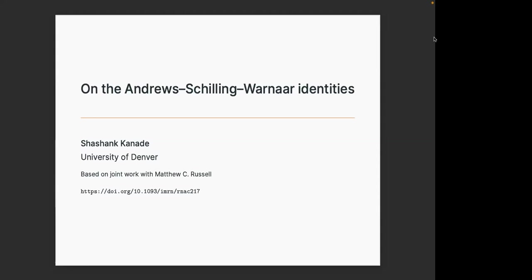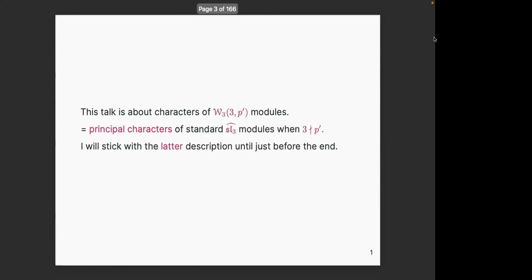My talk is on algebraic combinatorics, so it's a little bit different from the other talks in this conference, but it is related to W-algebras. Really, the talk is about characters of W_{3,3'} prime models, but that's a clickbait — I put in W-algebras because then experts might be interested. I would really like to think about these as principal characters of standard SL3-hat modules.